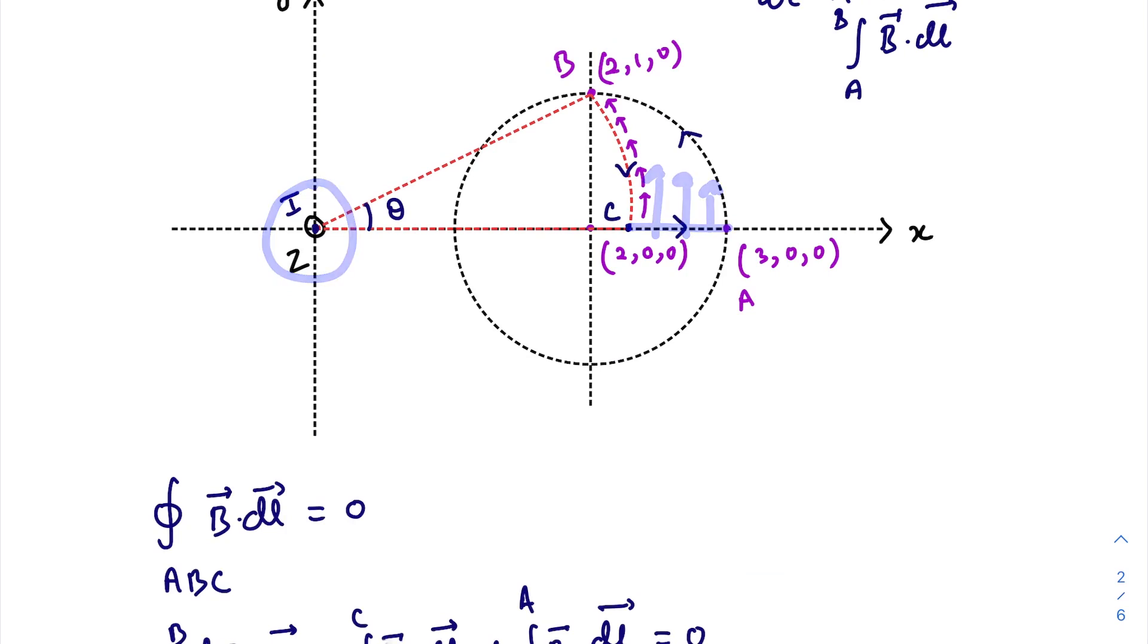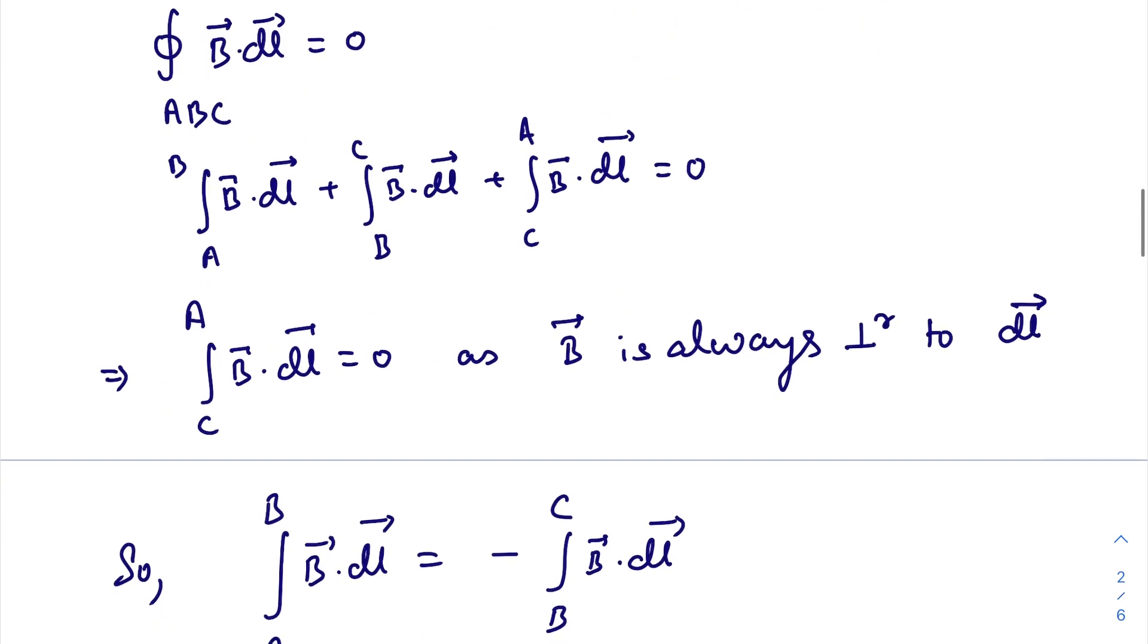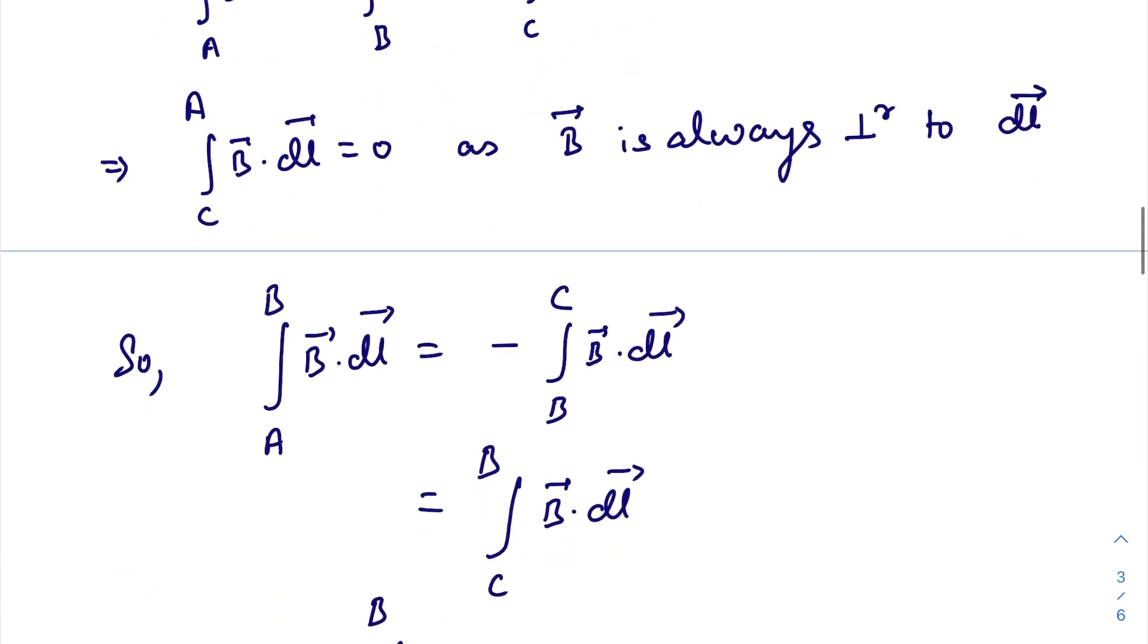It doesn't matter what the magnitude is, but the direction of the magnetic field is always perpendicular to this path, so the dot product will be zero. So this term becomes zero, and we have A to B equals negative B to C.